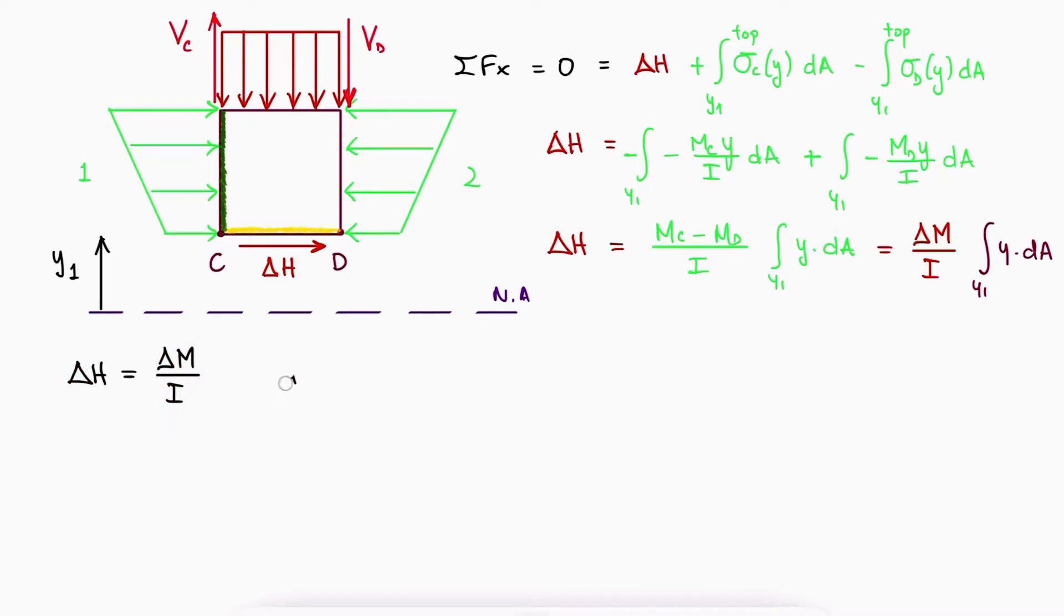If we take this delta H expression and we divide and multiply it by delta x, the length of the section of the beam we took out along the x axis, we see that for a small delta x, delta m over delta x becomes dm dx, or what is the same, the derivative of the moment with respect to x, which is just the shear force V.